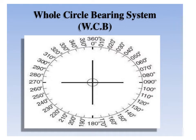This slide refers to graduations on the graduated circle of an arithmetic compass, which is shown in this particular diagram, having values from 0 to 360 degrees in a clockwise direction. The graduations marked on the graduated circle are inverted.